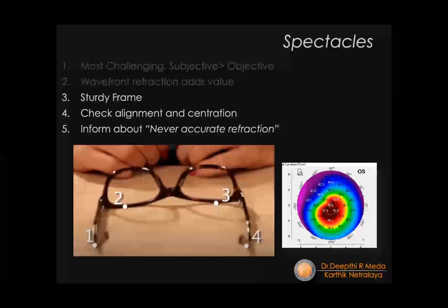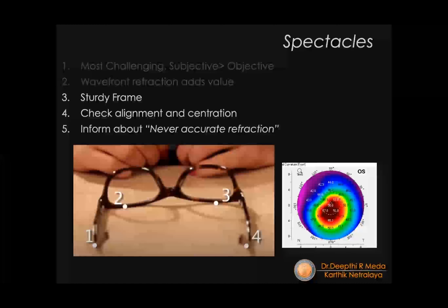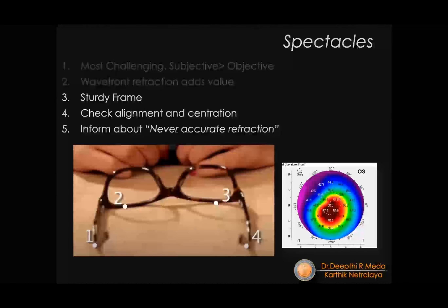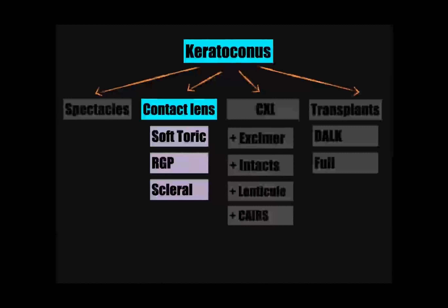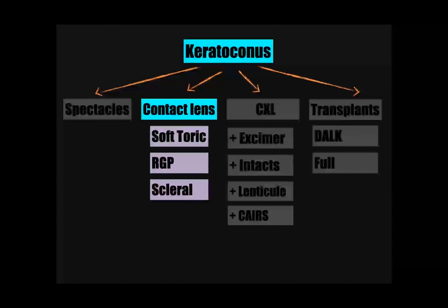Always go by the subjective refraction regardless of what axis the ARK or topography gives. When choosing a frame for these patients with high cylinder, choose a sturdy frame. The four-point touch should be checked every few weeks. Educate patients that refraction will vary at every visit — not because it has changed, but because the cornea is so irregular that a perfect pair of glasses is impossible. Contact lenses are the best modality for treating keratoconus.